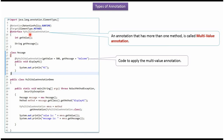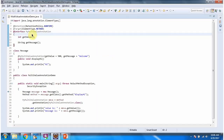Here I have defined the annotation called myMultiValue annotation. It has two methods: getValue and getMessage. If an annotation has more than one method, then it is called a multi-value annotation. Here I have defined the annotation myMultiValue annotation with two methods, getValue and getMessage.